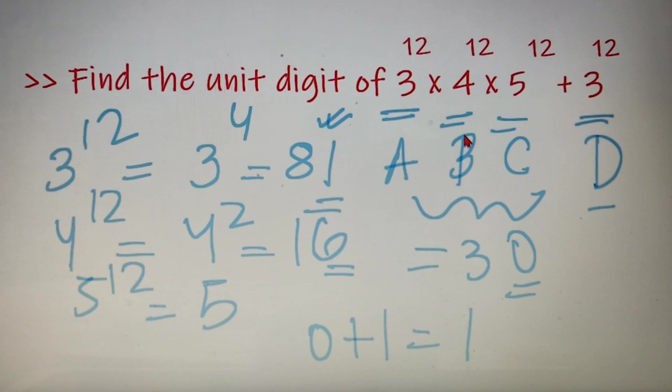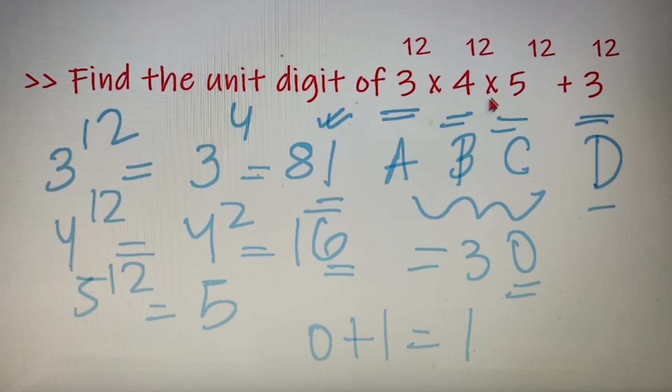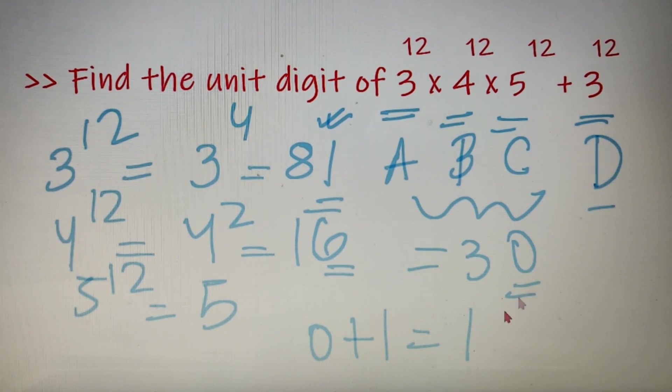So the unit digit of the complete expression — 3 to the power 12 into 4 to the power 12 into 5 to the power 12, plus 3 to the power 12 — is equal to 1.